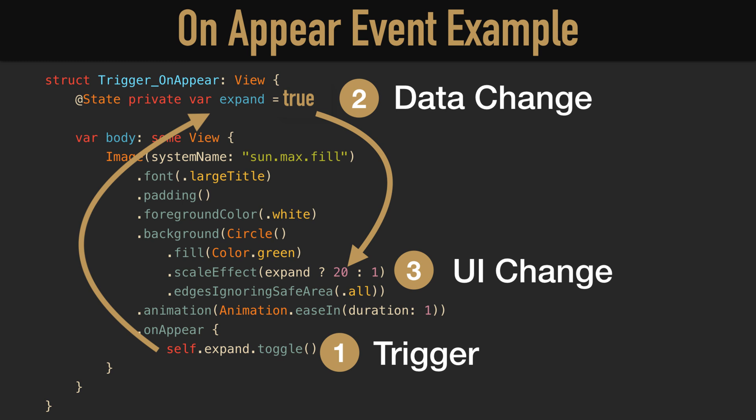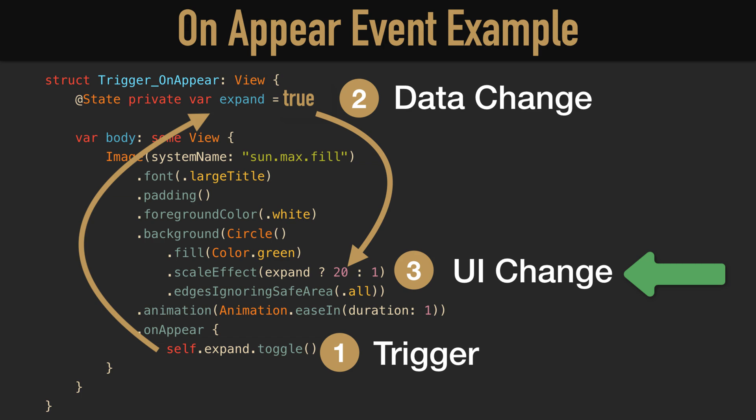So those are the three parts you need: one, some event that is going to be triggering the animation; two, some kind of data change — this is most likely going to be a state variable; and three, your view is going to respond to that variable change or data change. This is different from Swift because in Swift, when you tap a button, you just have UIView.animate and you can reference changing a UI view directly. But you can't do that with SwiftUI — you can't reference your other views directly. The only thing you can do is change some data, and then it's up to your view to respond to that data and perform some kind of UI change. And that's what you're animating — that UI change.